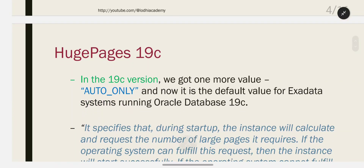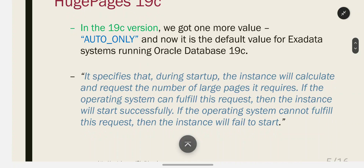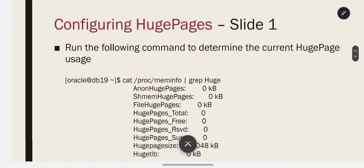In Oracle 19c, one more value was added: auto_only, and it is now the default for Exadata systems running Oracle 19c. It specifies that during startup the instance will calculate and request the number of large pages it requires. If the operating system can fulfill this request the instance starts successfully; if not, the instance will fail to start.